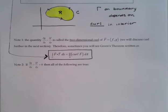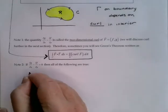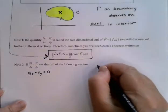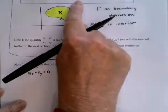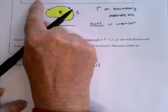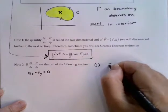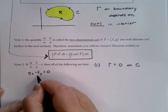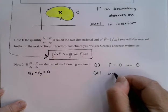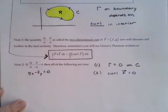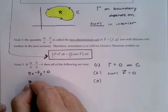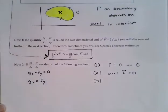A second note: if that curl, the g sub x minus f sub y, is zero, then we have a number of conclusions we can draw. First, if that equals zero, then we're integrating zero, so our circulation is going to turn out to be zero. Secondly, since that is the curl, we can say the curl of the vector field is zero. And thirdly, if I take this statement and move the f sub y over to the other side, g sub x equals f sub y.